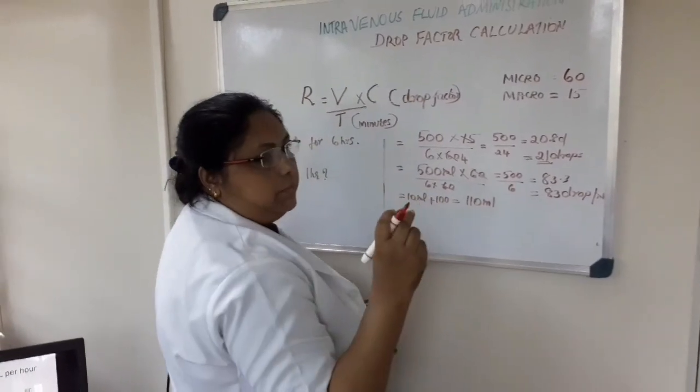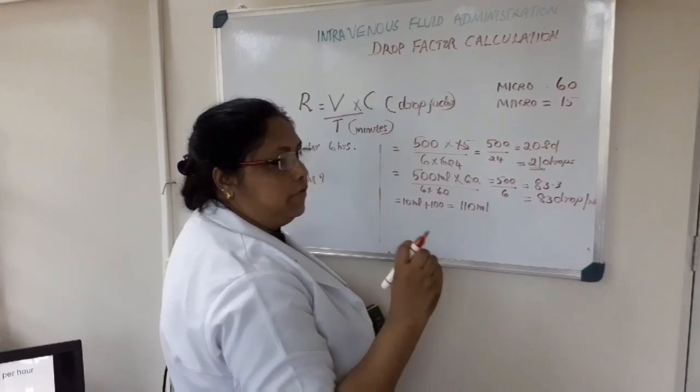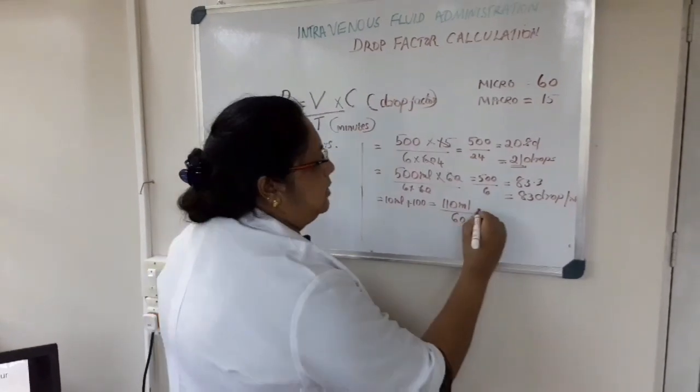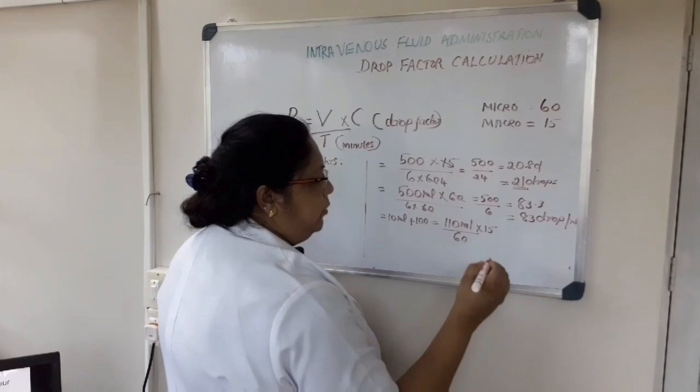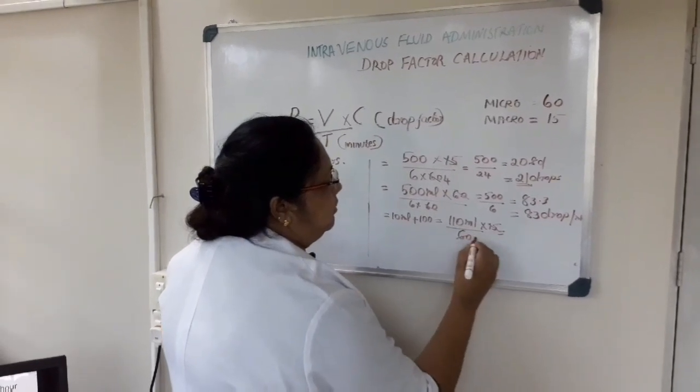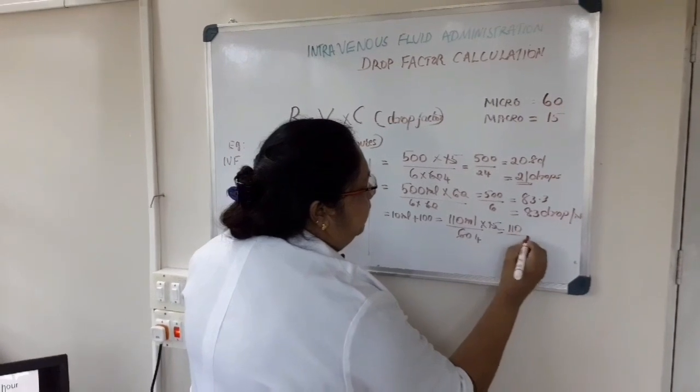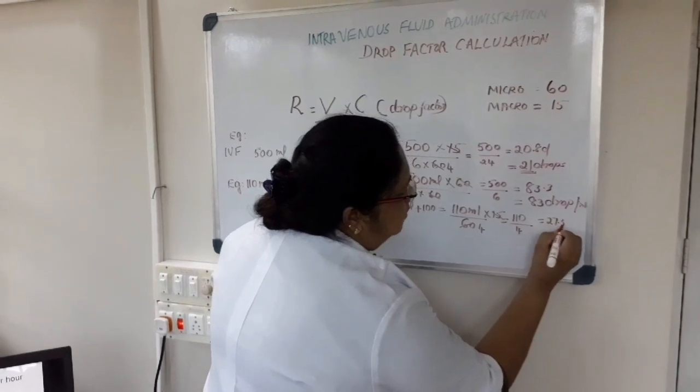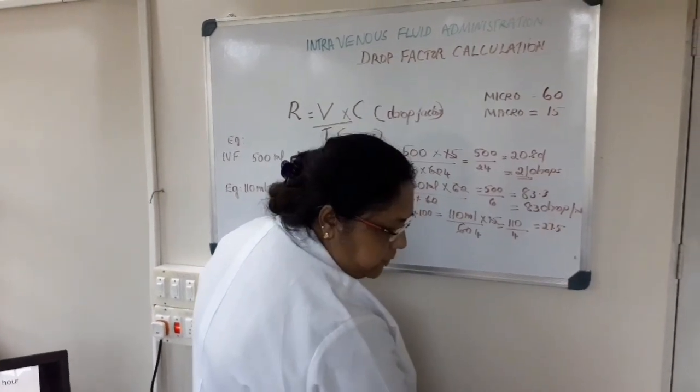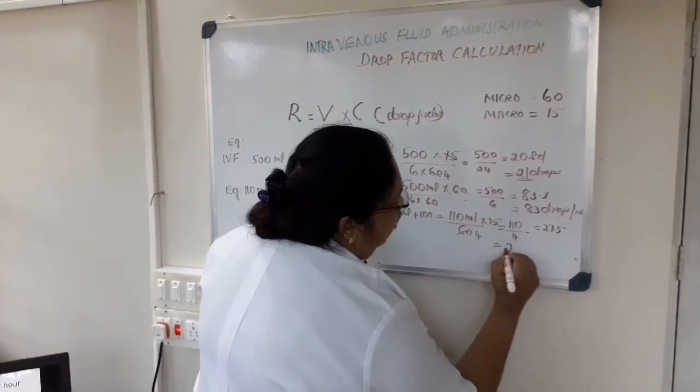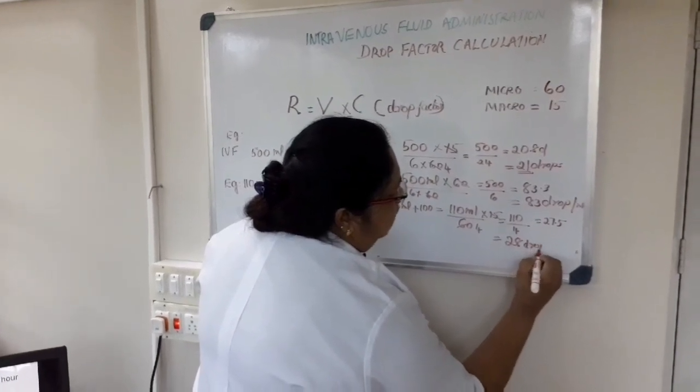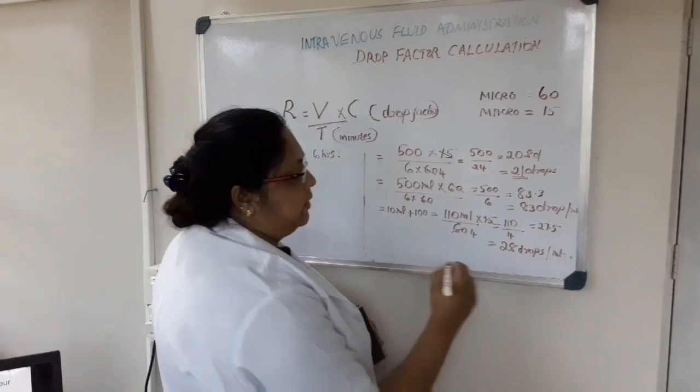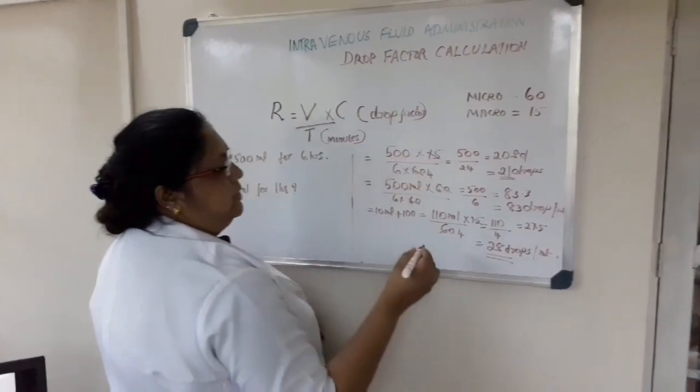The order is it should be administered as infusion for 1 hour. 1 hour, time in minutes means 60. The drop factor is 15. Now you can do the calculation. 15 cut with 4. 110 ml divided by 4, it equals to 27.5 drops or 28 drops per minute. If you are adjusting, the patient will finish the medicine of 110 ml per hour. These are the 3 methods or 3 types of calculation.